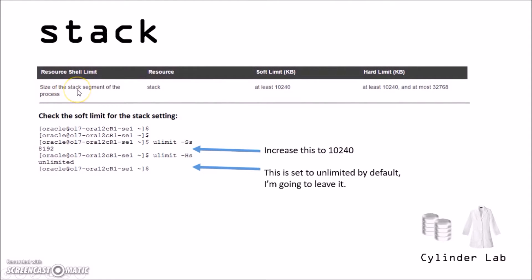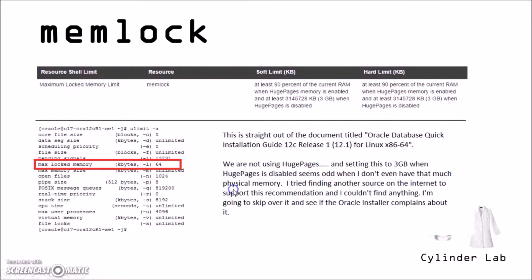The size of the stack segment of the process — soft limit and hard limit. I'm going to increase the soft limit to this value. The hard limit by default is unlimited, and although it says at most it should be this, it's already set to unlimited, so I'm just going to leave it. And then finally, there's this about the maximum locked memory limit, memlock. It says at least 90% of the current RAM when huge pages memory is enabled.